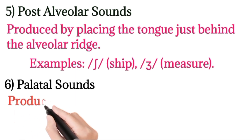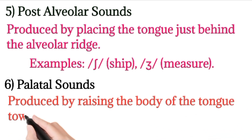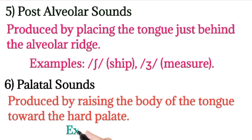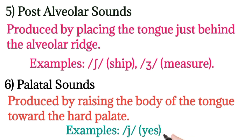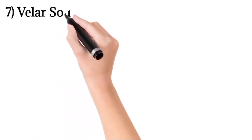The sixth place is palatal sounds. Palatal sounds are produced by raising the body of the tongue toward the hard palate. Whenever the body of the tongue is raised toward the hard palate, these are known as palatal sounds. There is only one palatal sound, which is the /j/ sound — represented by the letter 'Y' in English, as in the word 'yes'.